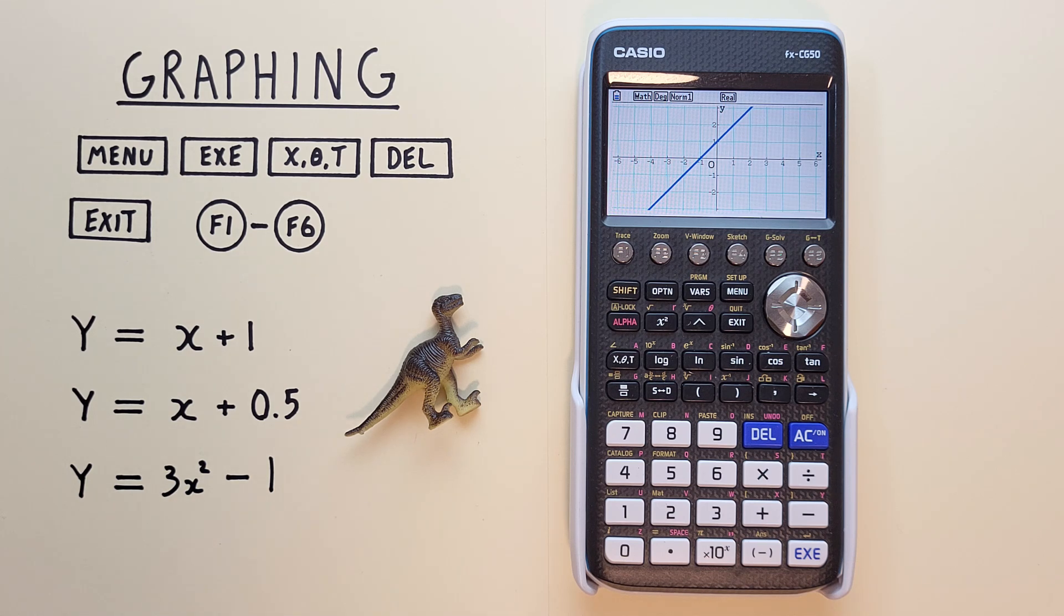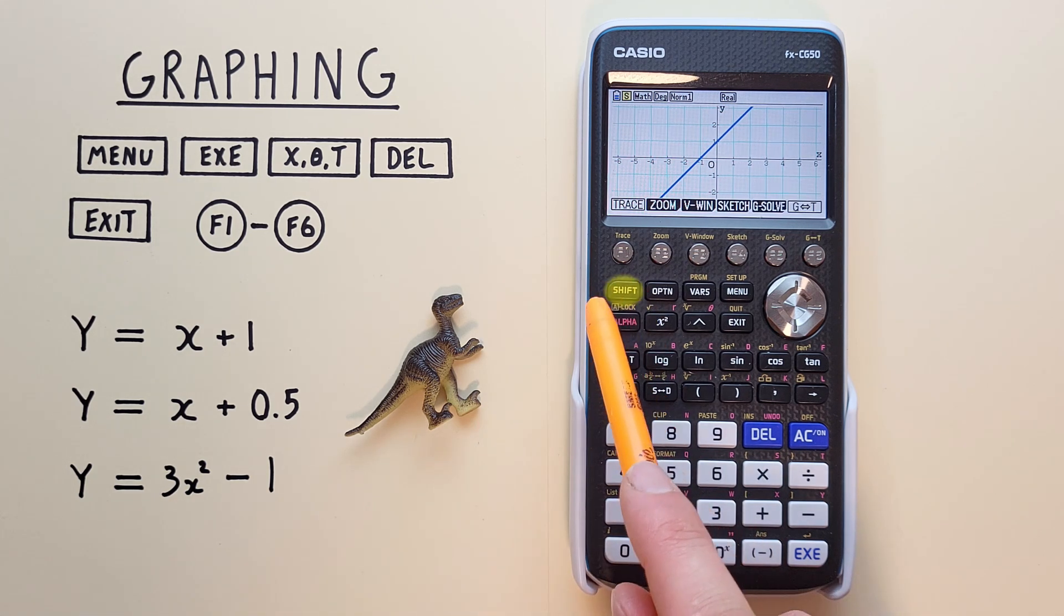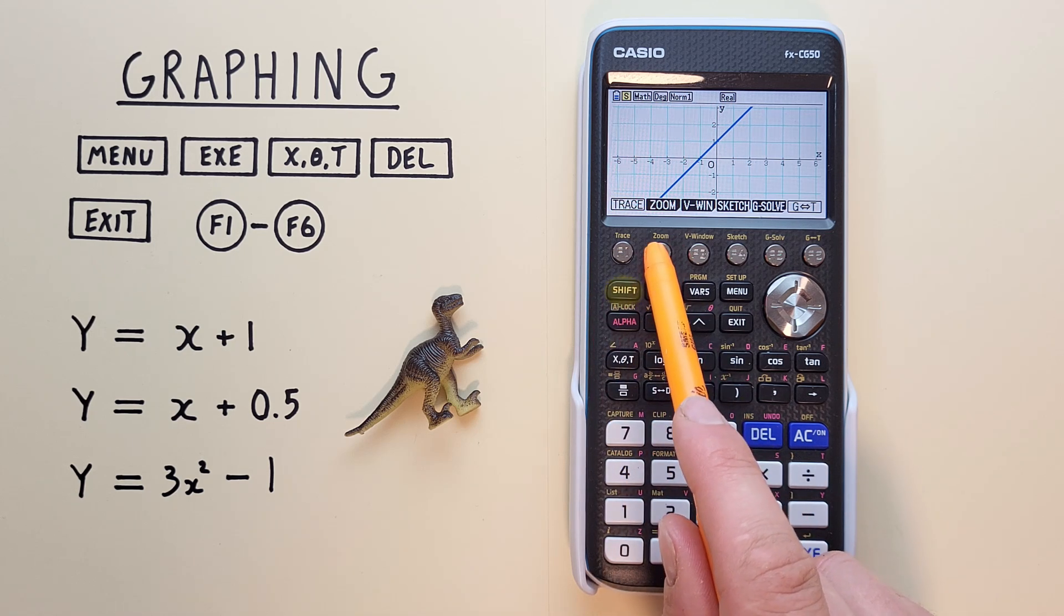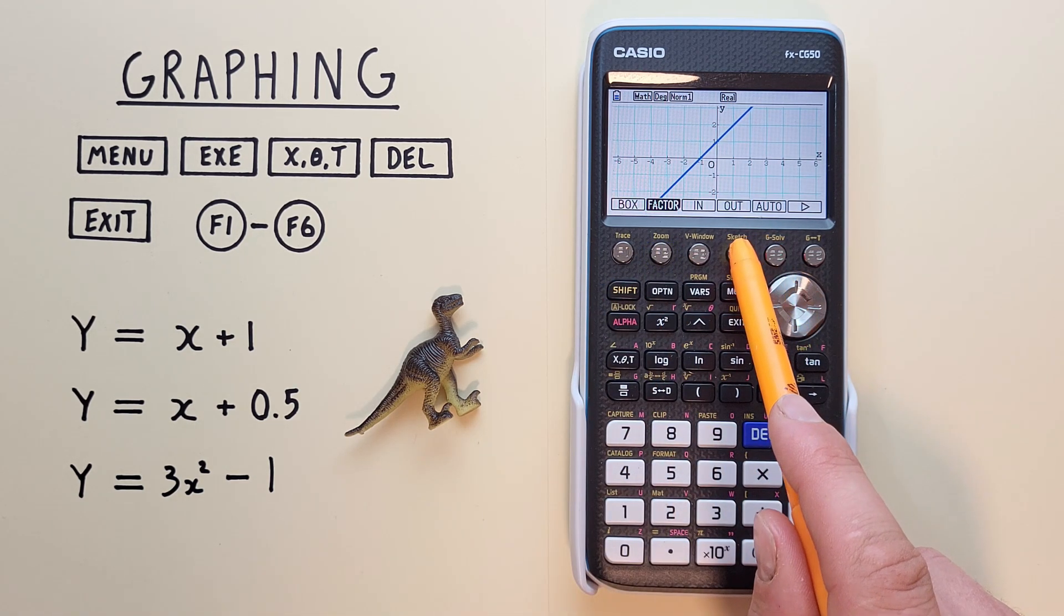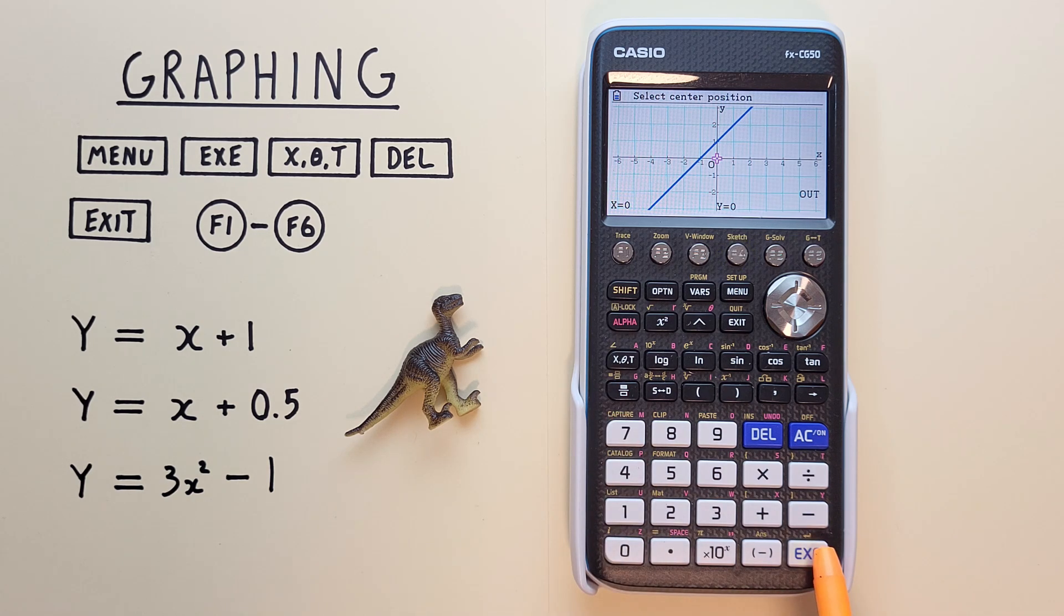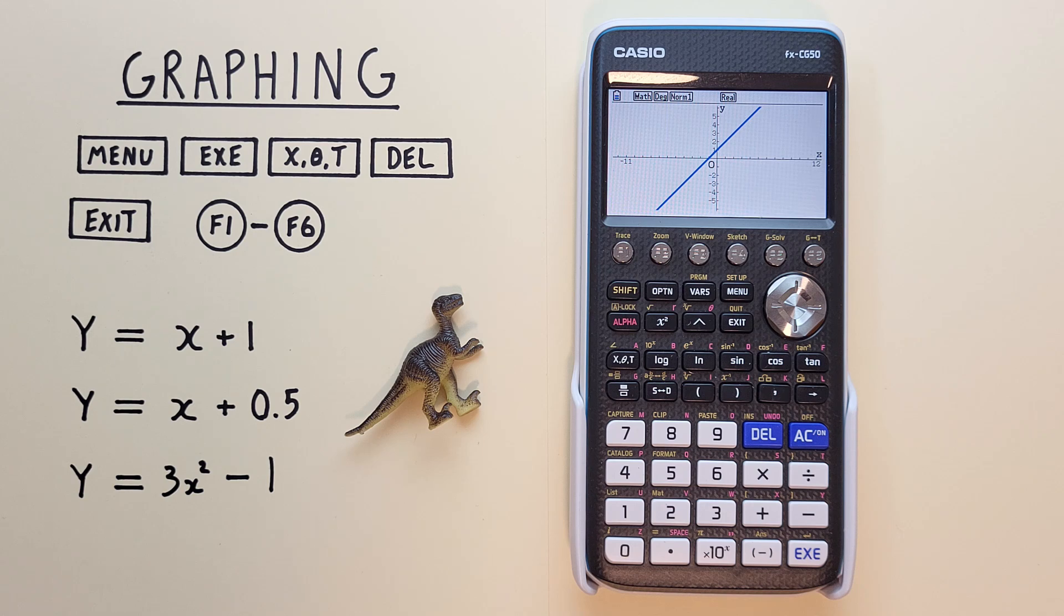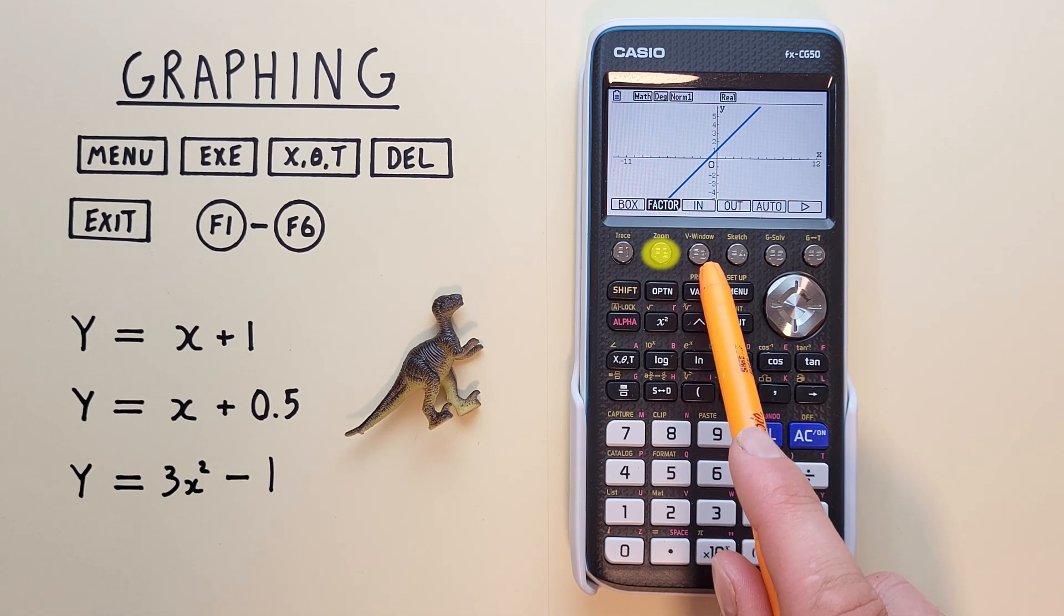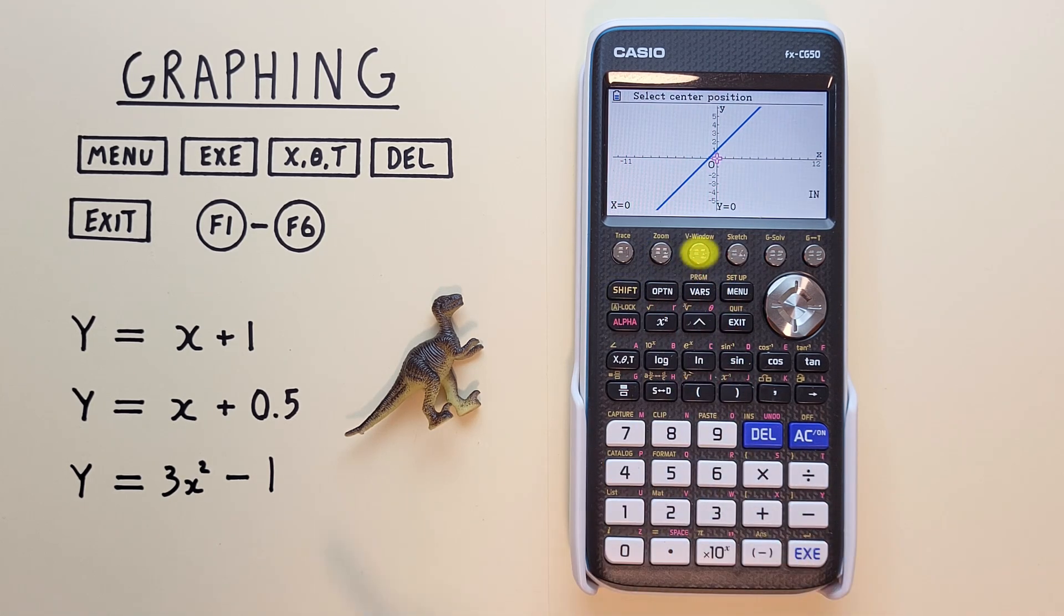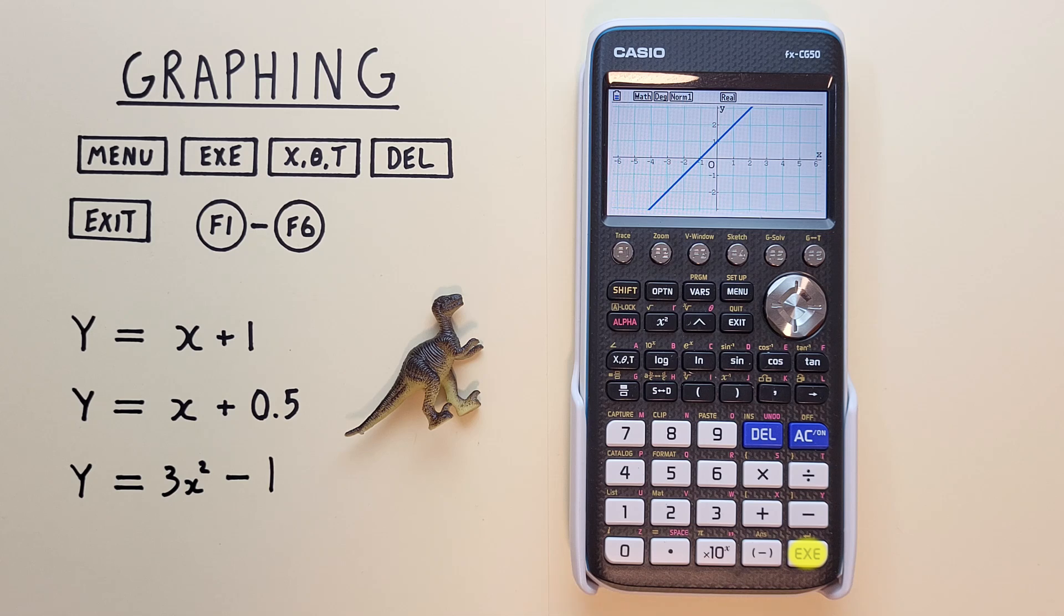We can also zoom by pressing Shift, and then F2 for zoom. If we want to go out, we hit F4, and then hit exe, and see that we've zoomed out. And we can zoom in with the Shift, Zoom, F3 for in. And again, hitting the exe key to zoom in.